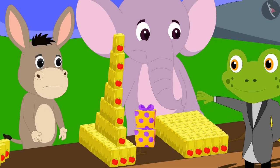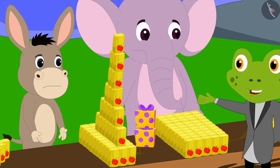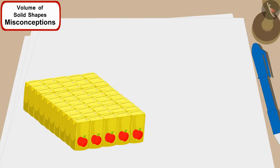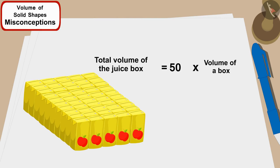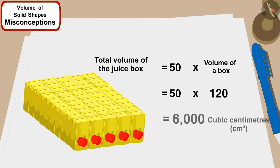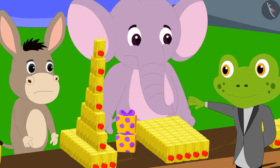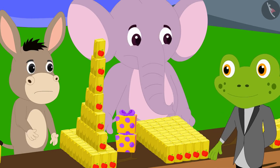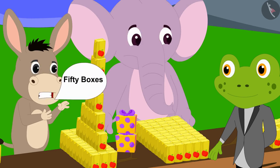Taru the frog asked Appu: 'How many juice boxes have you used in your shape?' Appu quickly said: '50 boxes.' Taru replied: 'This means the total volume of juice in your shape will be 50 times the volume of one box — 50 times 120 — that is equal to 6,000 cubic centimeters.'